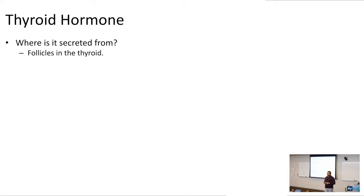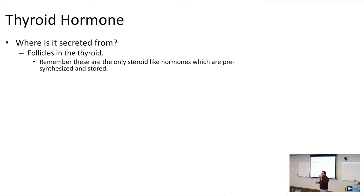It is the only steroid-like hormone that is going to be pre-stored. Usually, steroid hormones are going to be made on demand. However, thyroid hormone has an intranuclear receptor. Remember that histology section of seeing the thyroid follicle — thyroid hormone is the only steroid-like hormone that is pre-stored and not made on demand. These are the only steroid hormones that are pre-synthesized and stored.